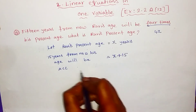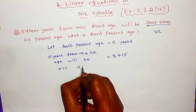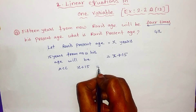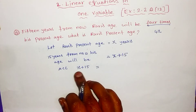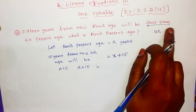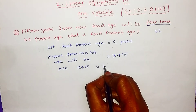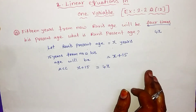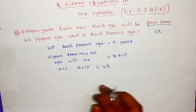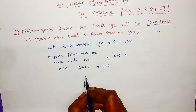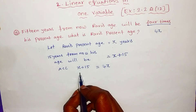So we have x plus 15 is equal to 4x. We will get an equation: x plus 15 equals 4x.